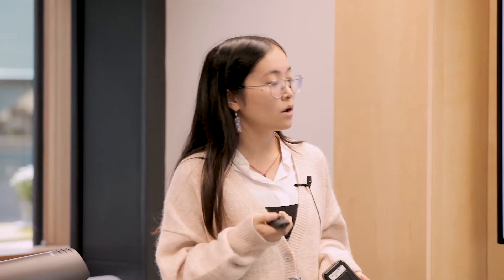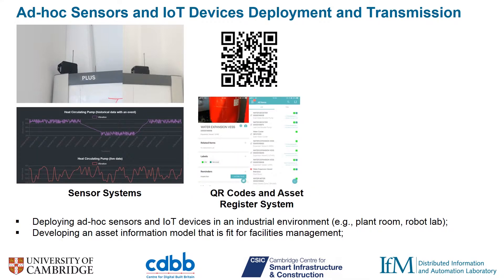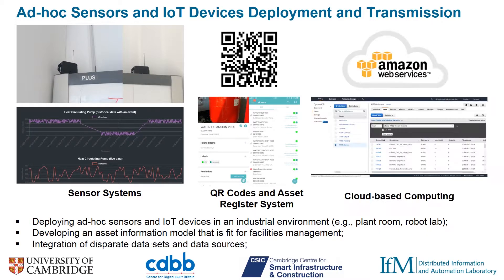The second work package involves over 50 sensors installed in FM buildings, including humidity, temperature, and motion detectors. More than 200 tags are attached to assets in FM, and we can communicate with facility managers through QR codes.